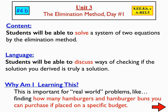Today, lesson 4B — elimination method, day number one. So far with systems of equations, we've talked about how to solve a system by graphing. Then we spent a couple of days on a method called the substitution method. And today we learn the first day of a method that most of you will probably prefer more than the other two methods. Today's objective: solve a system of two equations by the elimination method.